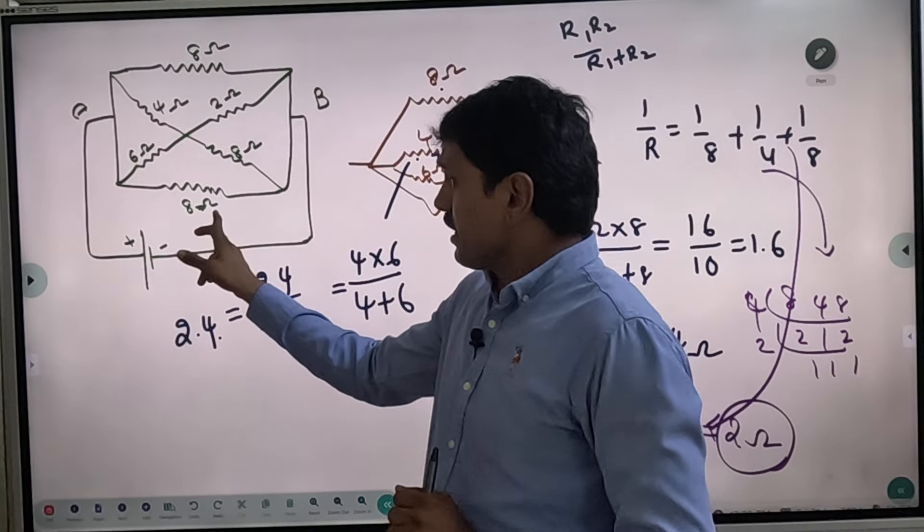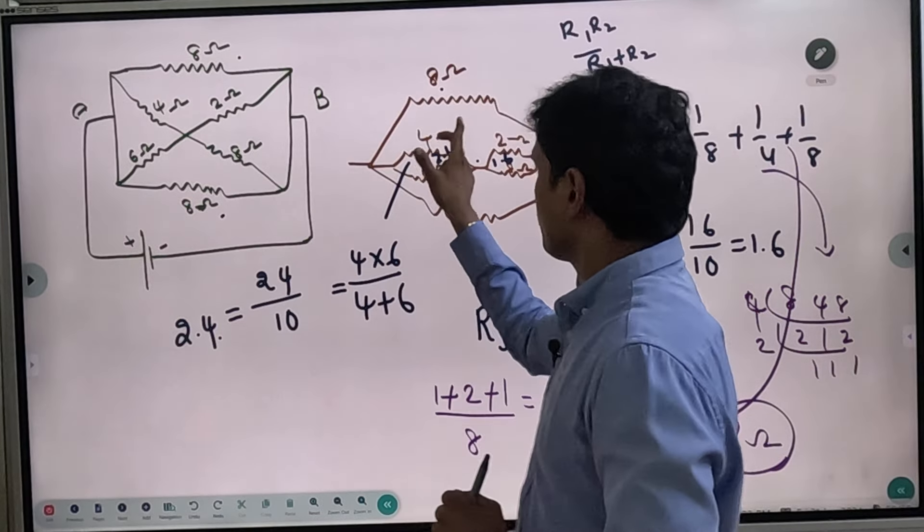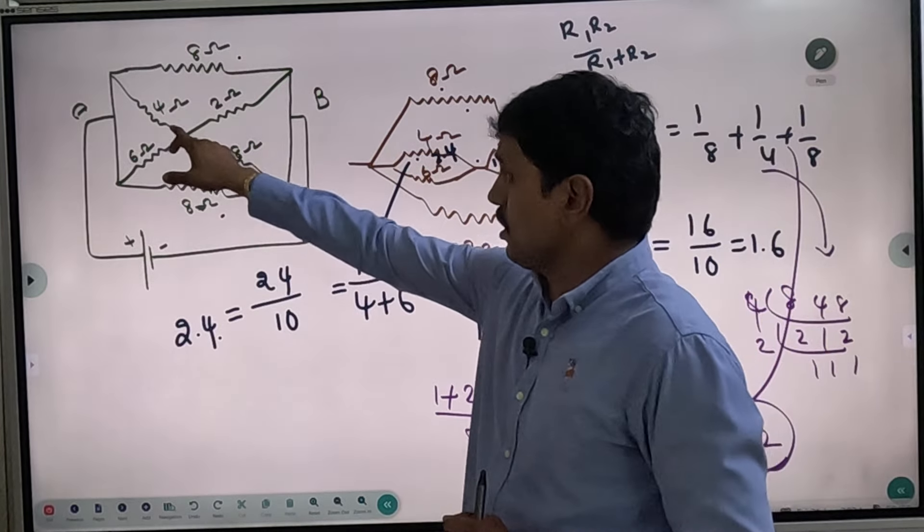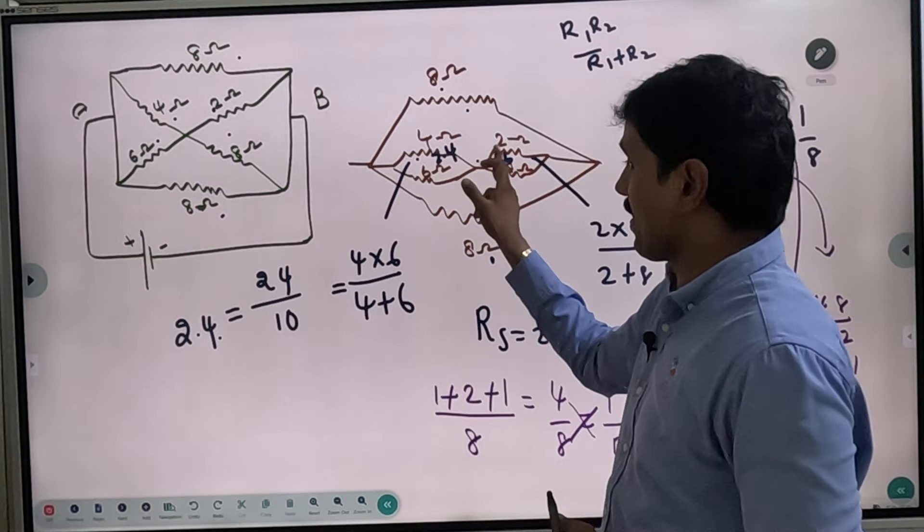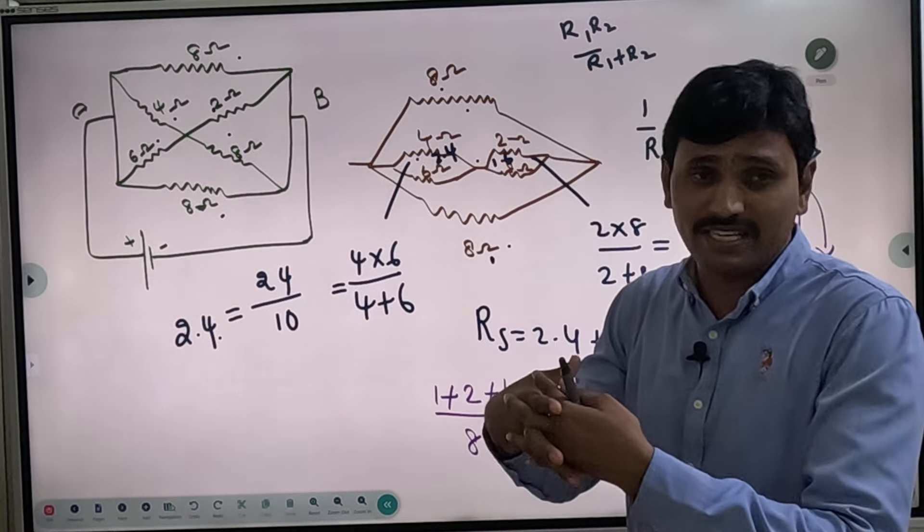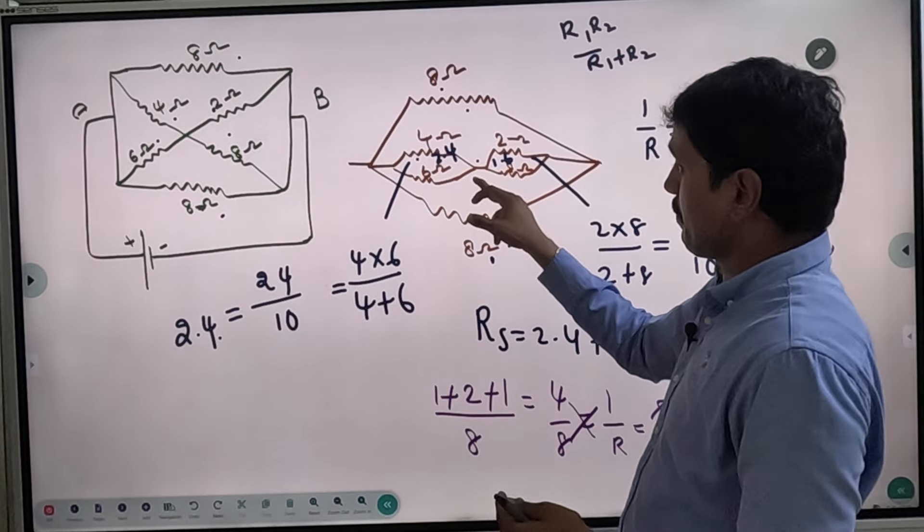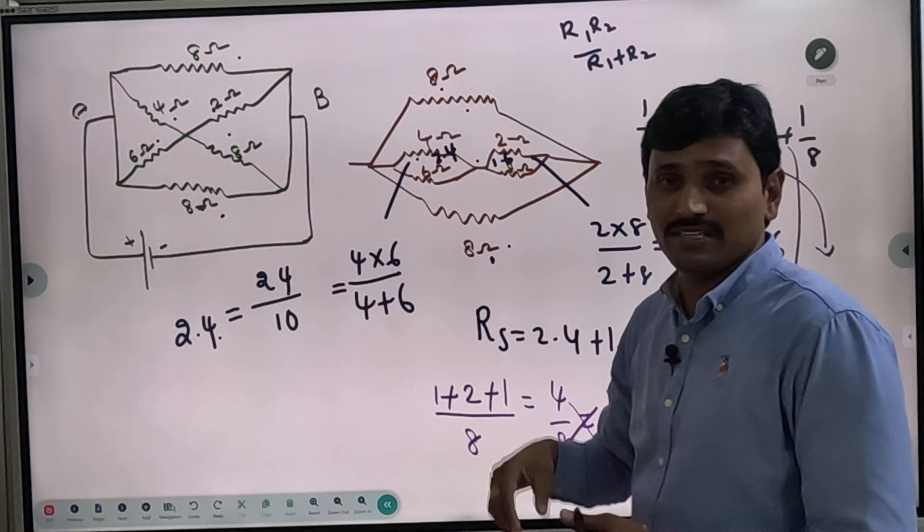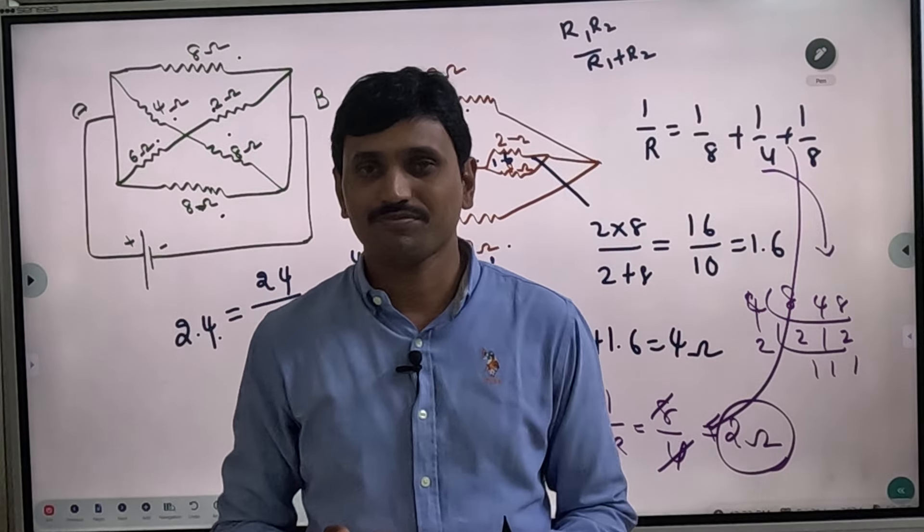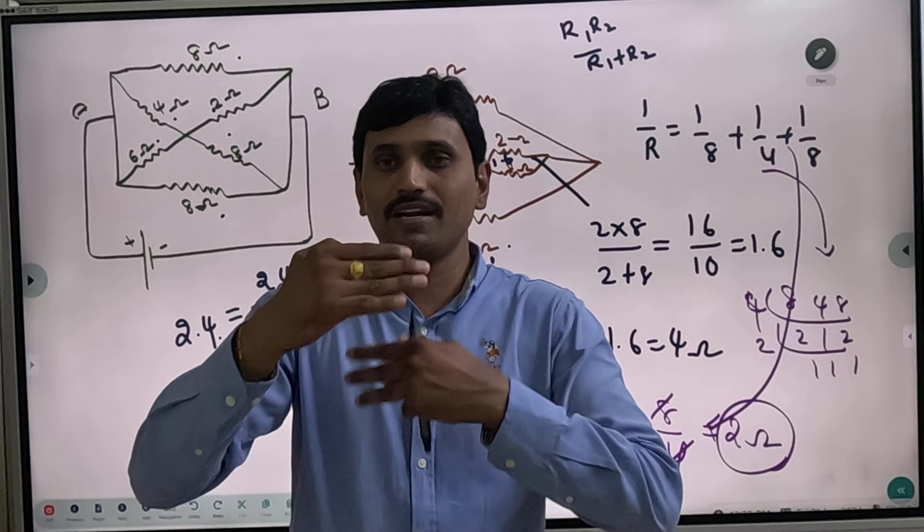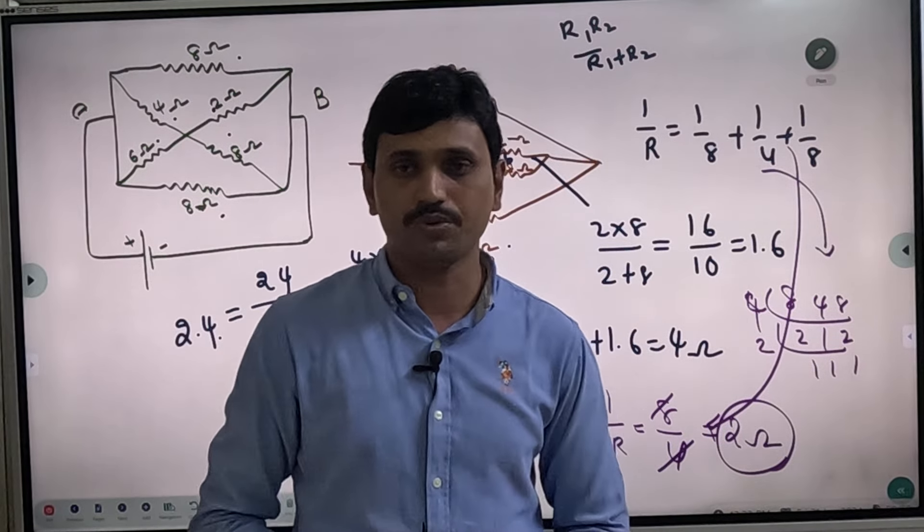Here we have 8 ohms and 8 ohms. This is parallel. Then we can do parallel. In the middle, we can do parallel. What value do we get? 2 ohms. Simple. This is the answer. That's all.